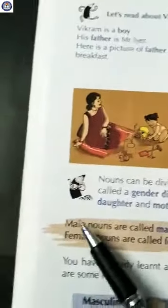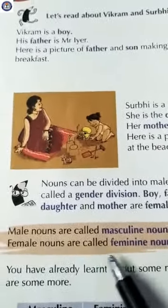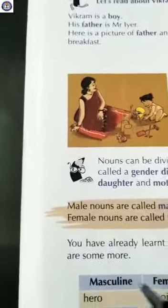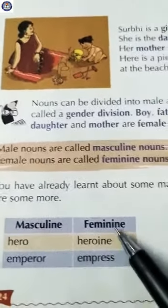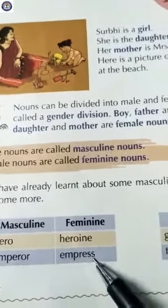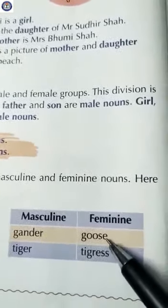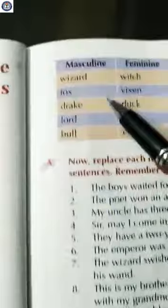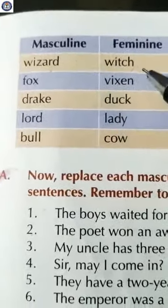Masculine: hero, and feminine: heroine. Masculine: emperor, and feminine: empress. Masculine: gander, and feminine: goose. Masculine: tiger, and feminine: tigress. Masculine: wizard, and feminine: witch.